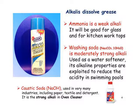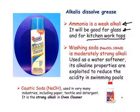Ammonia is present in a cleaner because alkalis are good at attacking and dissolving grease, and ammonia is an alkali. It would be described as a weak alkali with a pH of around 9, so it will be good at attacking surfaces with small amounts of dirt and grease — things like a window cleaner or something used to clean the worktops in a kitchen.